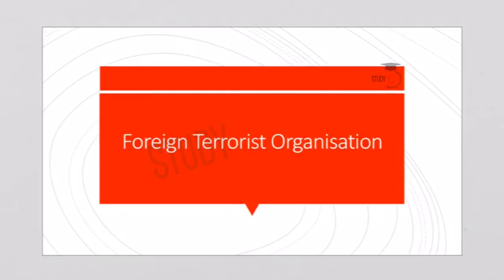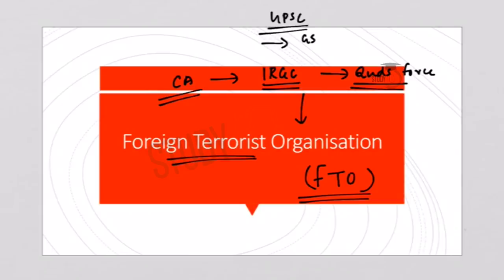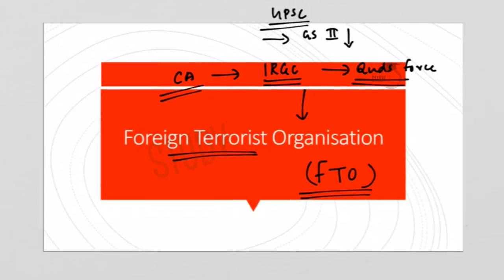Hello my dear friends and welcome to StudyIQ. I am Joycey Joy and today in this lecture we will discuss about Foreign Terrorist Organizations or FTOs. Looking at current affairs, the US Secretary of State recently announced the US intent to designate the Islamic Revolutionary Guard Corps, that is IRGC, including its Quds Force, as an FTO or Foreign Terrorist Organization. From your UPSC perspective, this is a very important topic for GS Paper 2 under bilateral or international relations. We will discuss why the US designated IRGC and the Quds Force as an FTO and what are the implications.